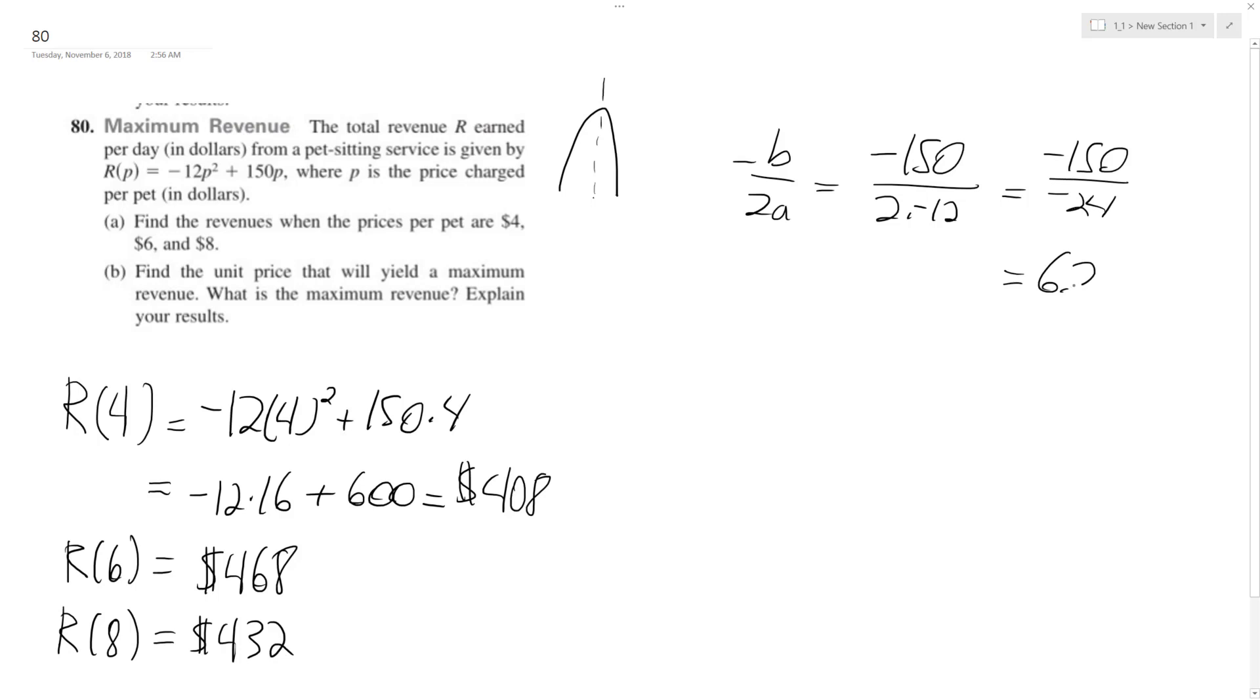So that's equal to 6.25, and if we plug this back in, so R of 6.25. So we end up with negative 12 times 6.25 squared plus 150 times 6.25, and we end up with, this ultimately leads to $468.75 when you add everything together.